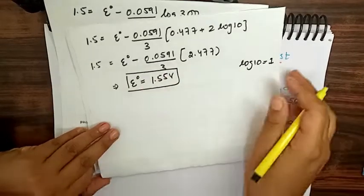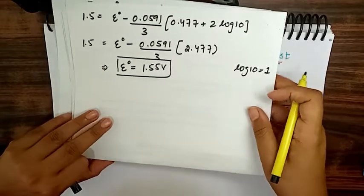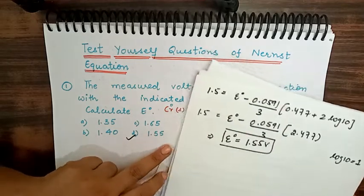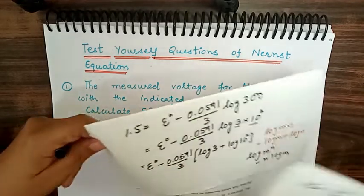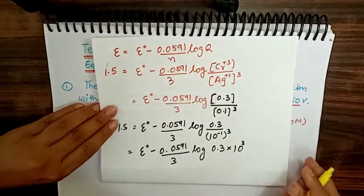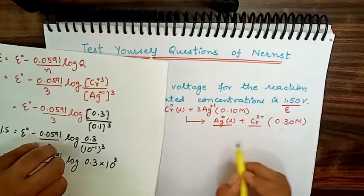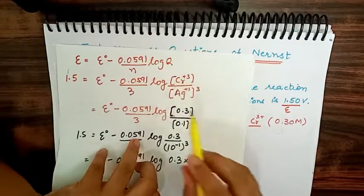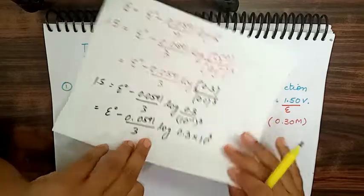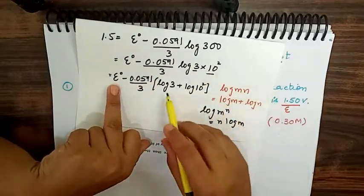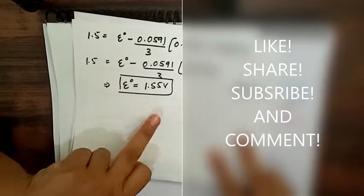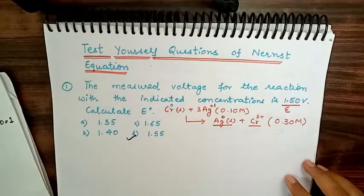Solving this, the value of E° comes out to 1.55 volts. This is just calculation practice. So option D is correct. To summarise Q1: E was given, E° was asked; Q = [Cr³⁺]/[Ag⁺]³ with pure solid = 1; concentrations substituted; log rules applied to simplify 300; and E° = 1.55 V was found.